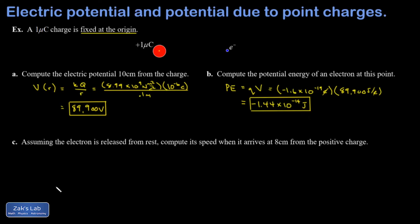In Part C, I'm saying assuming the electron is released from rest, compute its speed when it arrives at the 8 centimeter separation point. So it's only moved 2 centimeters toward this positive charge.